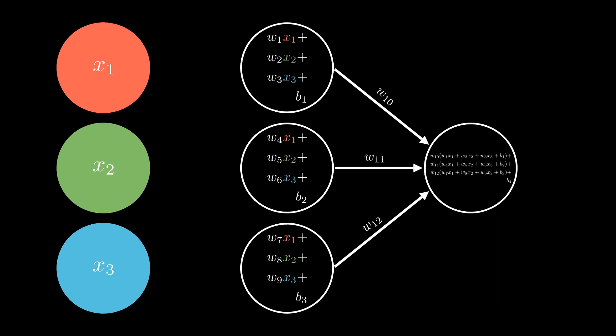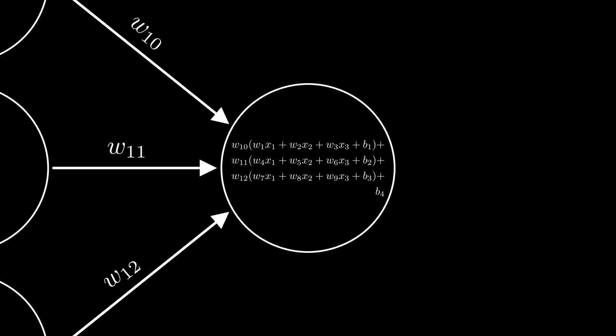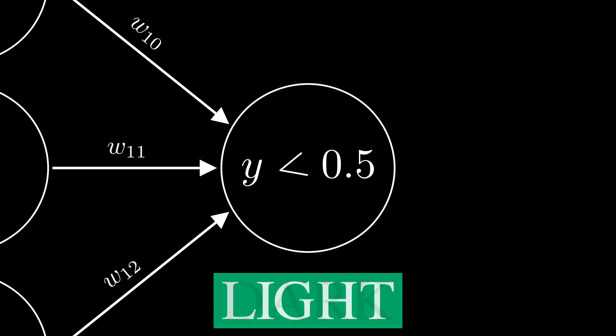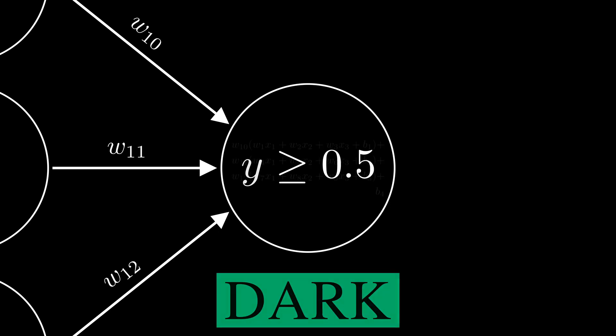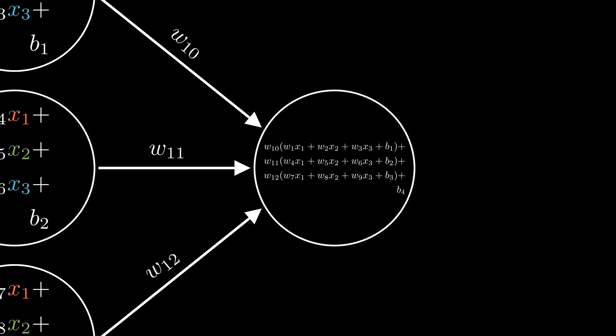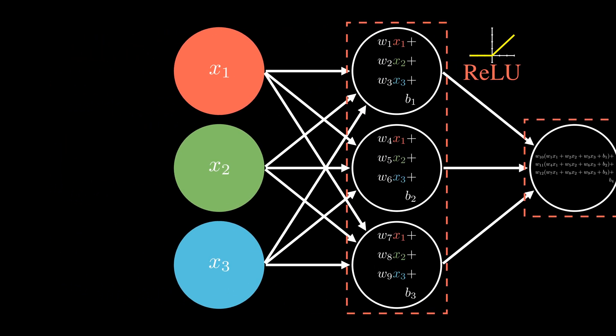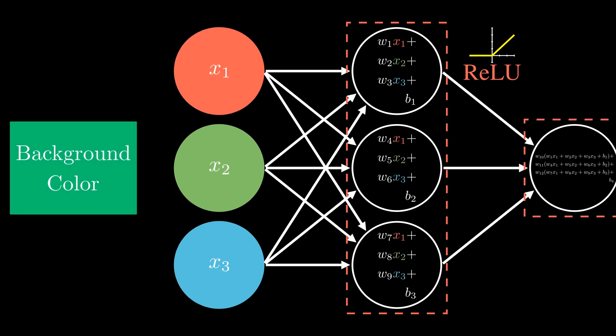Let's zoom in on that output node. If our prediction is less than 0.5, we will categorize it as light. If it is greater than or equal to 0.5, we will categorize it as dark. On top of these multiplication and addition operations in each node, we will also apply activation functions. Let's pass this greenish background color through our neural network.